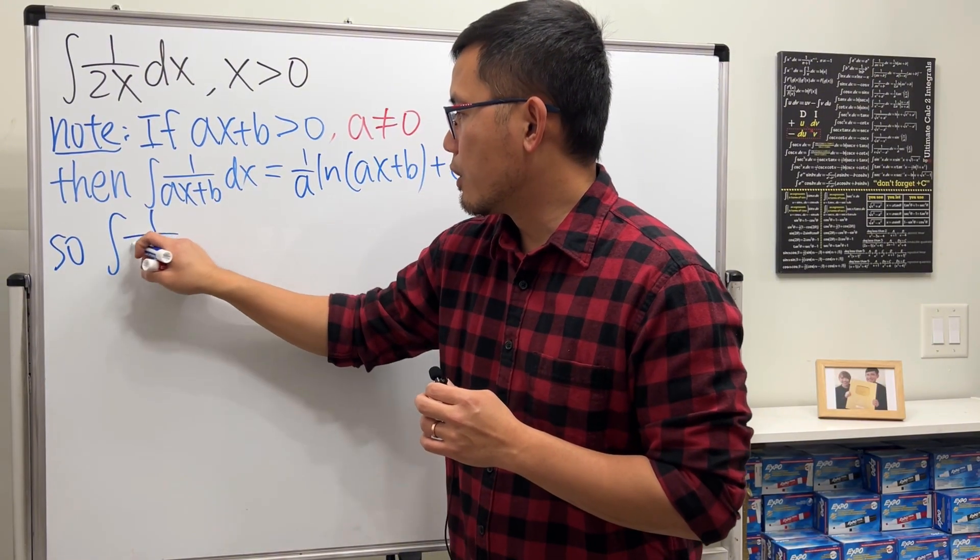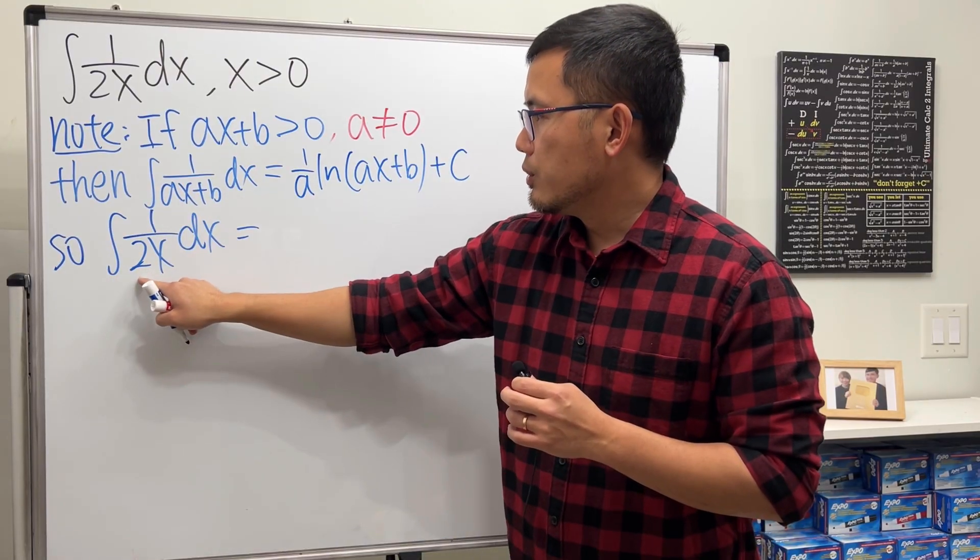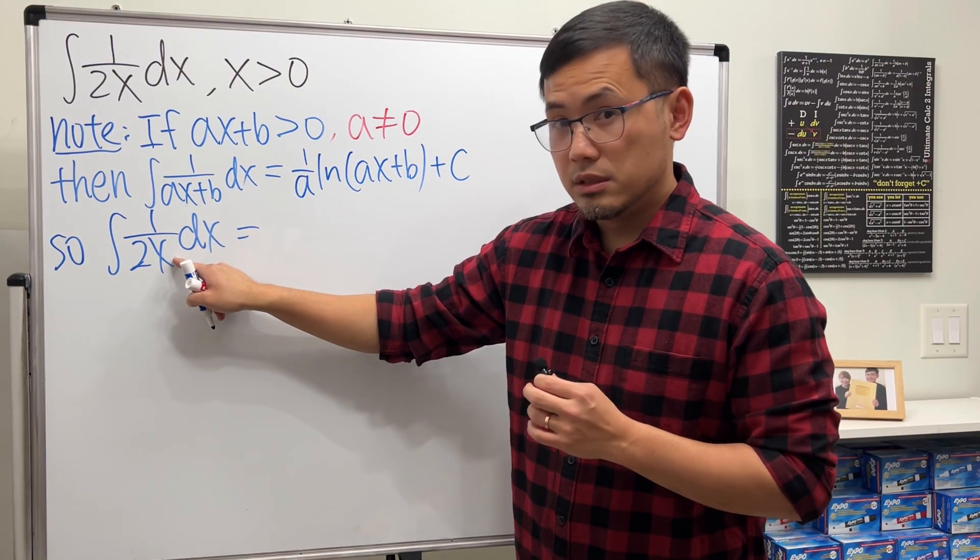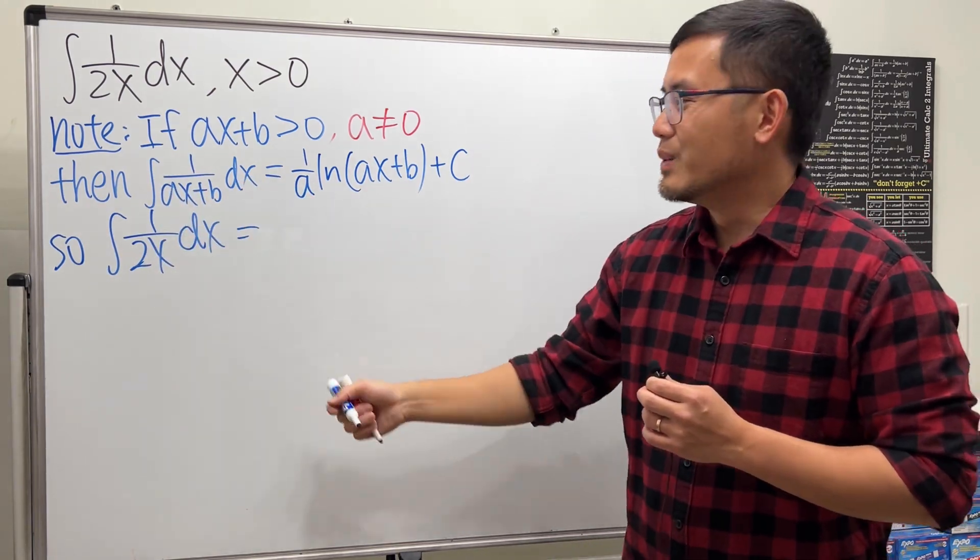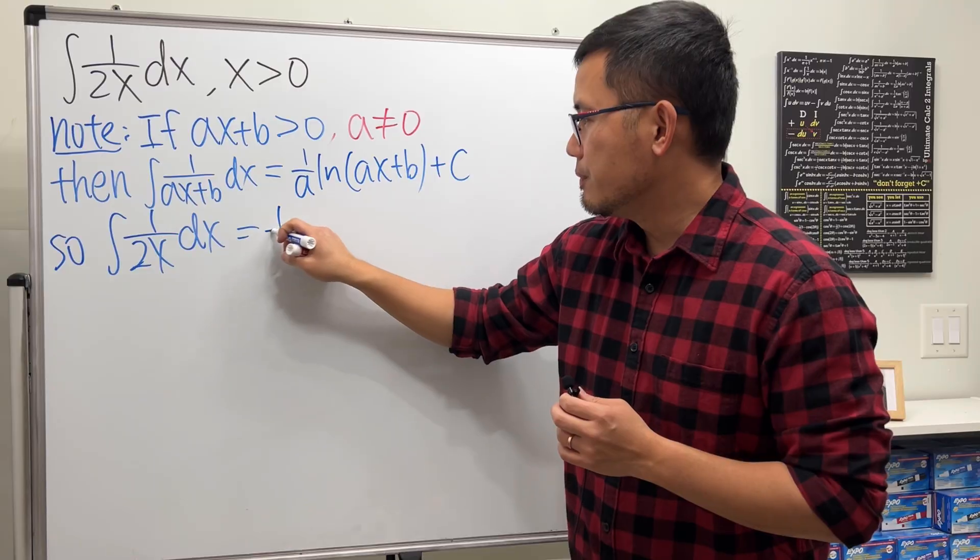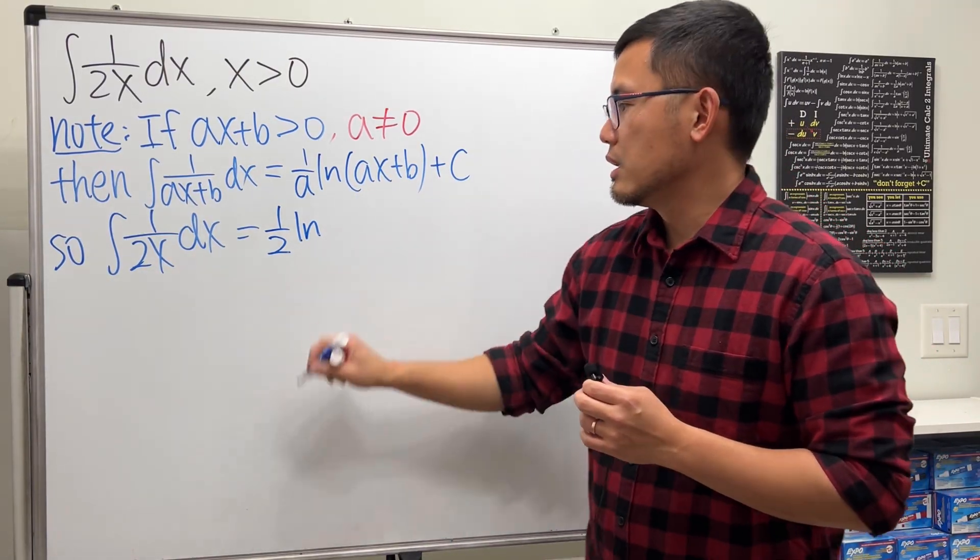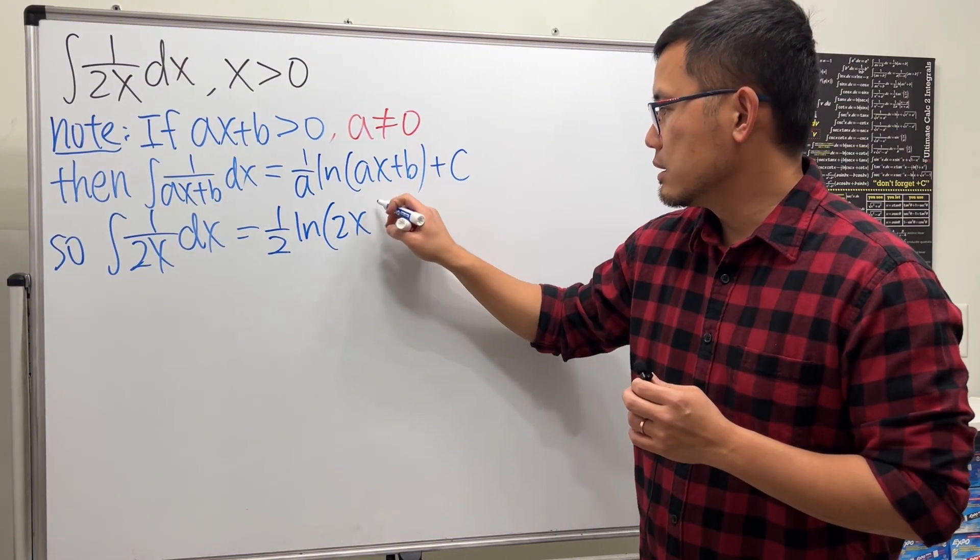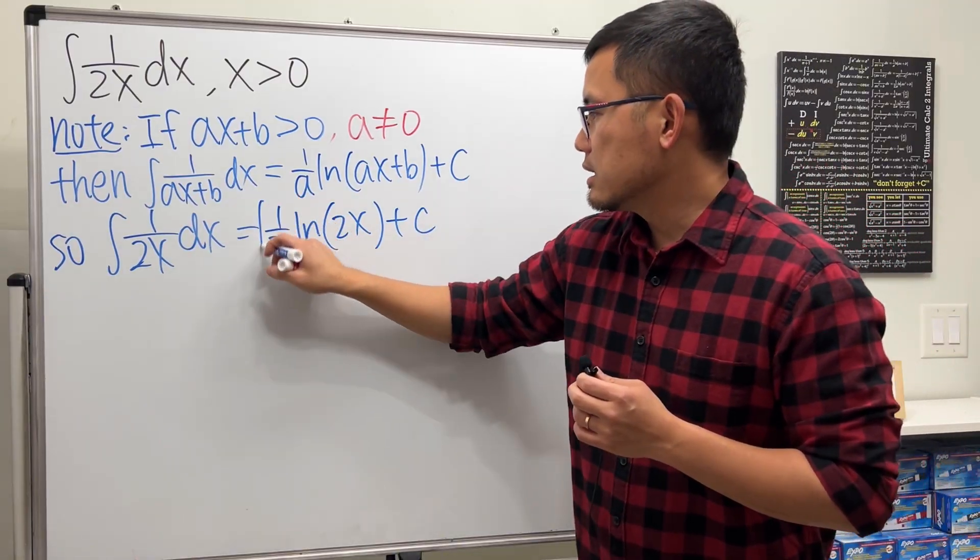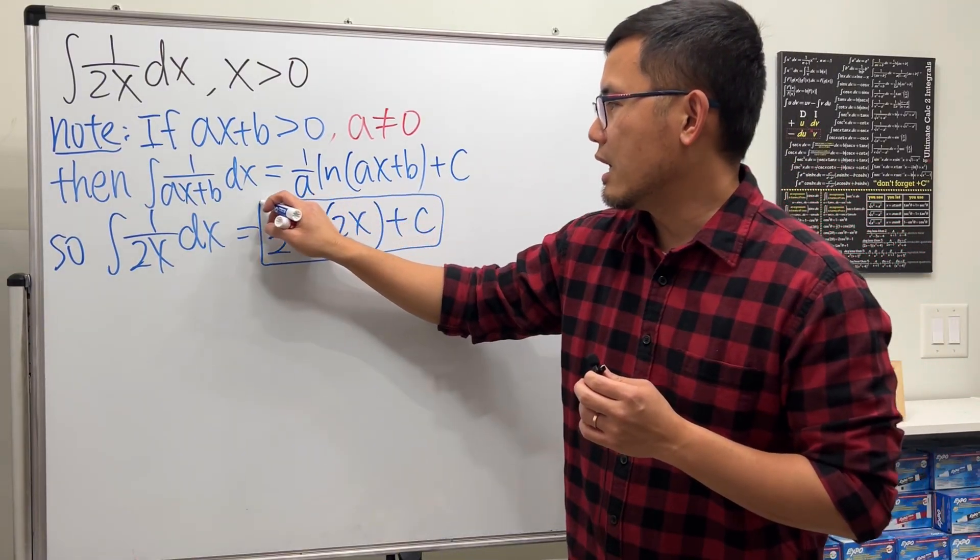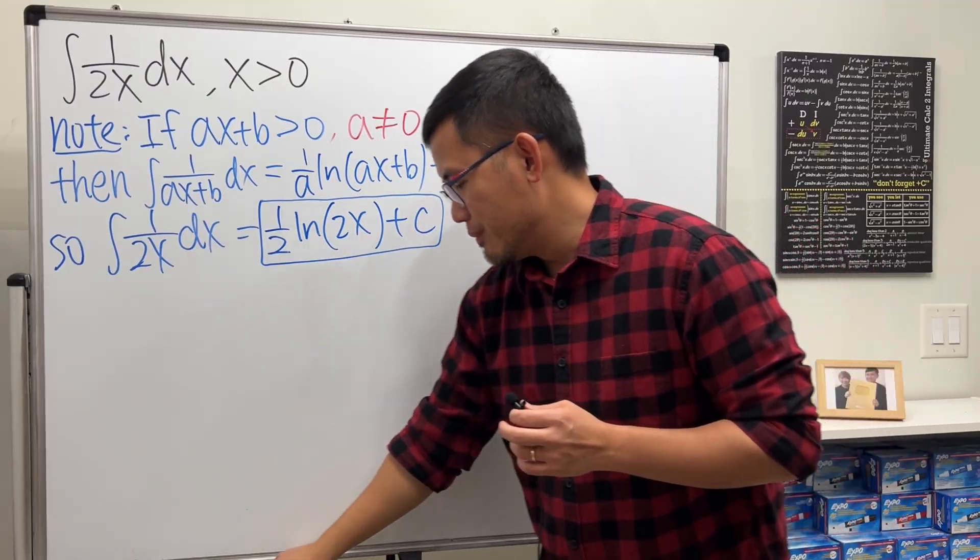All right, so from here we can see that the integral of 1/(2x)dx - a is 2, x is x, b is zero. So we can apply this formula, we'll just get 1/2 times ln of the input, which is just the 2x, parenthesis 2x. Because we have x is greater than zero, so this is positive, and that's the first answer that we have if we use the formula.